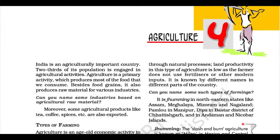Cotton. India is believed to be the original home of the cotton plant. Cotton is one of the main raw materials for the cotton textile industry. In 2017, India was the second largest producer of cotton after China. Cotton grows well in the drier parts of the black cotton soil of the Deccan Plateau. It requires high temperature, light rainfall or irrigation, 210 frost-free days, and bright sunshine for its growth. It is a Kharif crop and requires six to eight months to mature. Major cotton-producing states are Maharashtra, Gujarat, Madhya Pradesh, Karnataka, Andhra Pradesh, Telangana, Tamil Nadu, Punjab, Haryana, and Uttar Pradesh.